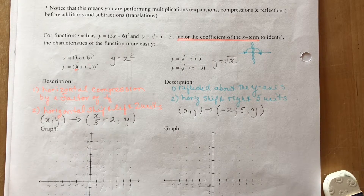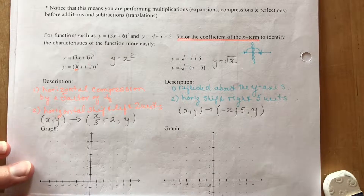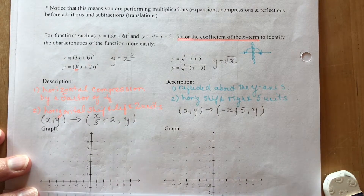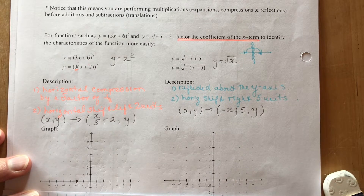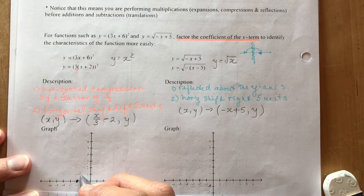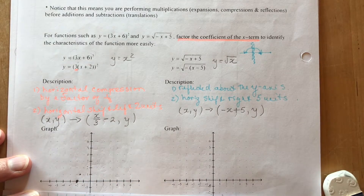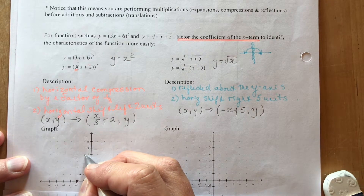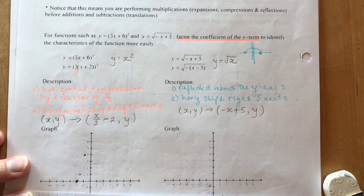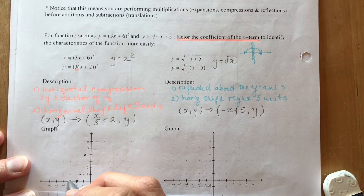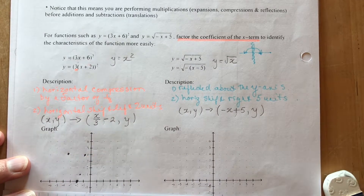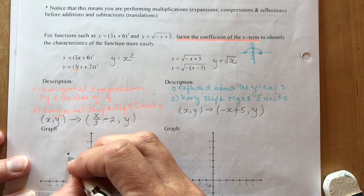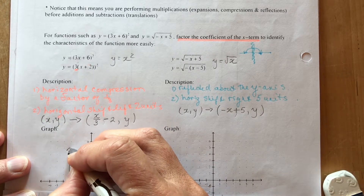Now take those transformed coordinates and plot them on the graph. We have: (−2, 0), (−5/3, 1), (−4/3, 4), (−8/3, 4) — which is about −2 and one-third — and (−7/3, 1). Plotting these gives us the shifted, compressed parabola.